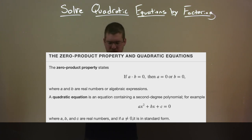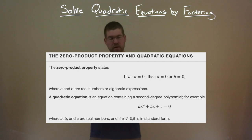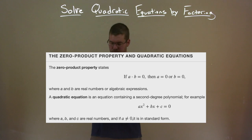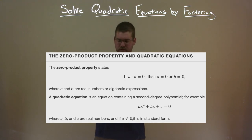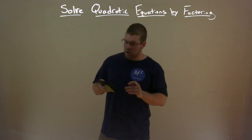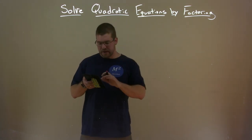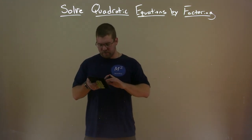A quadratic equation is an equation containing a second-degree polynomial. For example, ax squared plus bx plus c equals zero, where a, b, and c are real numbers. If a does not equal zero, it is in standard form. That ax squared plus bx plus c form is something you'll see quite often.